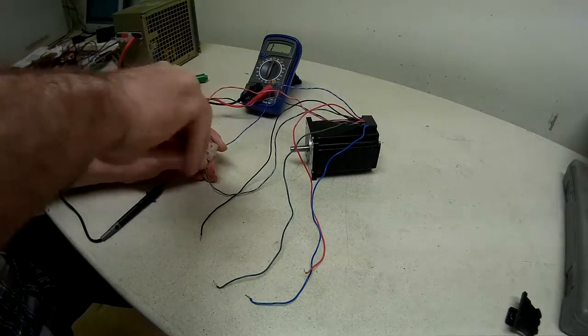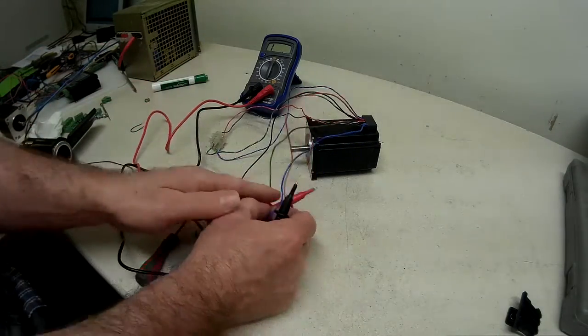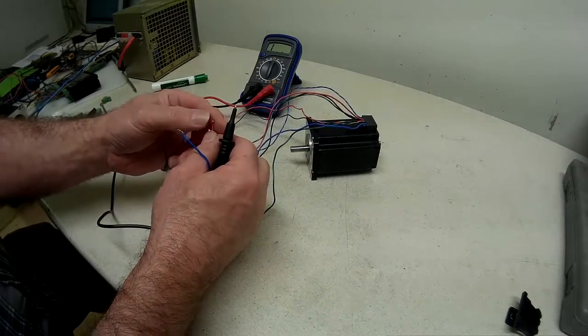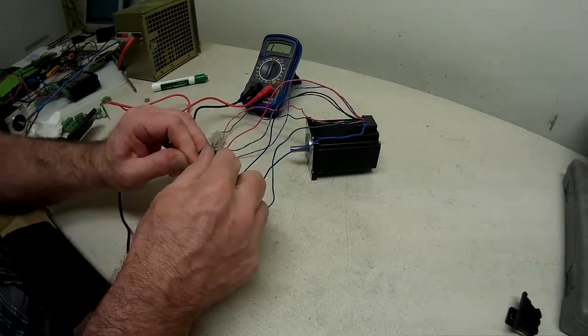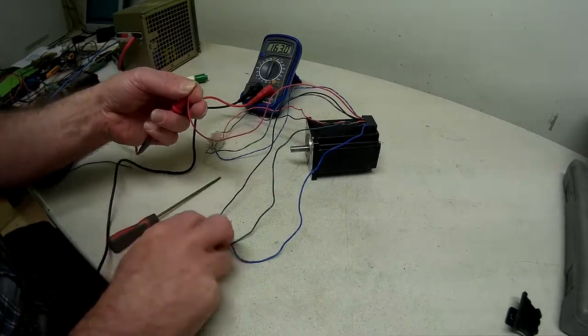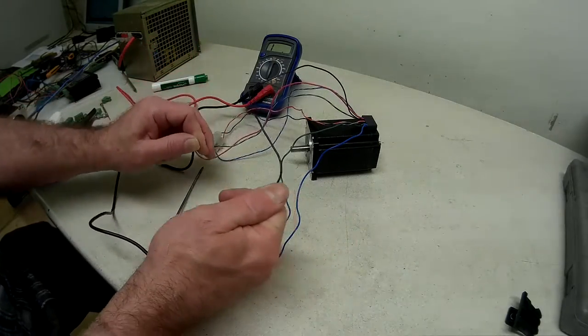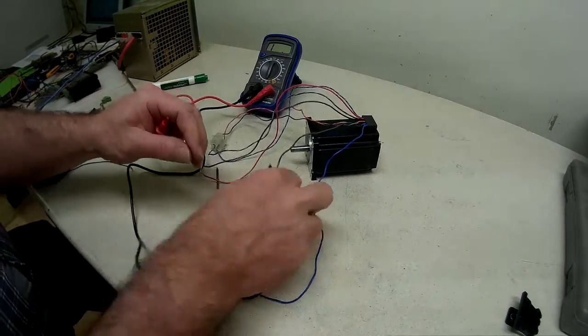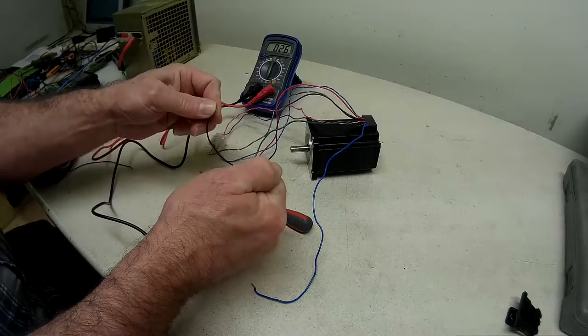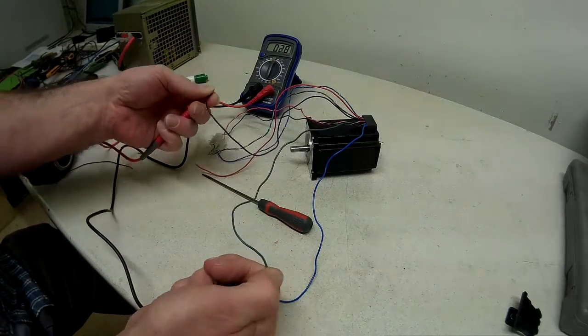Before we didn't have any connections between those primary colors, but if we have a look with the meter now, we're looking for a connection between the red and the blue. Because that should be effectively one coil made out of two coils, we've got 2.8 ohms between there and there. If I take the red one and connect it to the green one, no connection. Black one, no connection. Between the black and the green, which is our other coil now, we're getting 2.6 to 2.7 ohms.